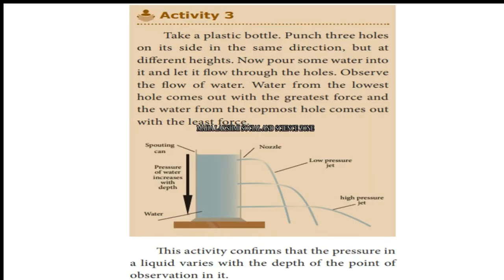Activity 3: Take a plastic bottle and punch 3 holes on its side at different heights in the same direction. Now pour some water into it and let it flow through the holes.